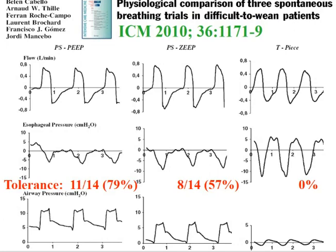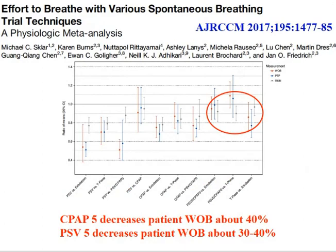This is especially relevant in patients who are difficult to wean. Even with a small pressure support of 7 cmH2O with no PEEP, almost half the patients tolerated the technique — whereas when these same patients were breathing during T-piece, none of them tolerated spontaneous breathing without any assistance. A recent physiologic meta-analysis confirms that systematically, either low levels of CPAP or low levels of pressure support consistently decrease the work of breathing compared to totally unassisted breathing.